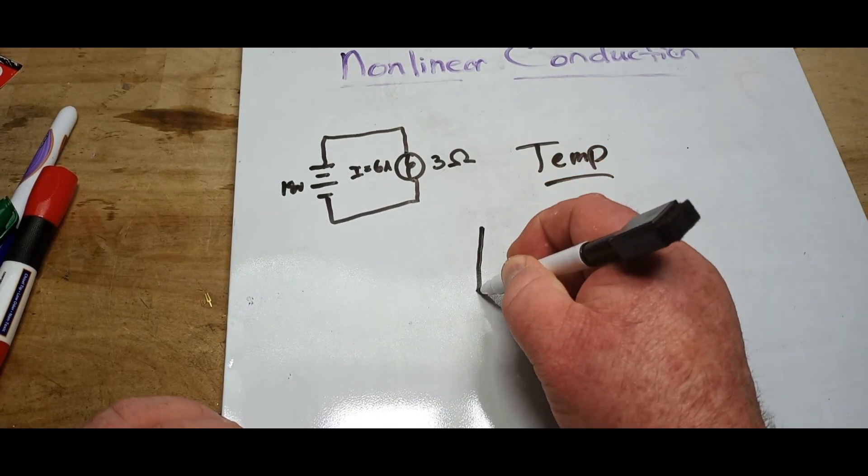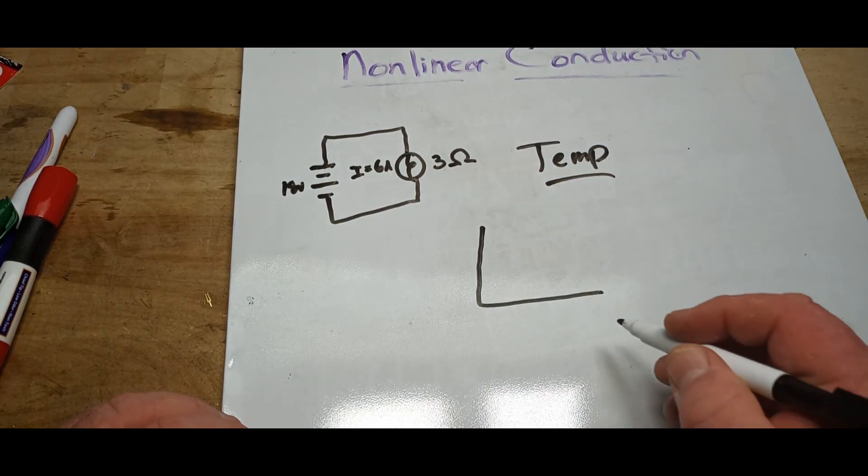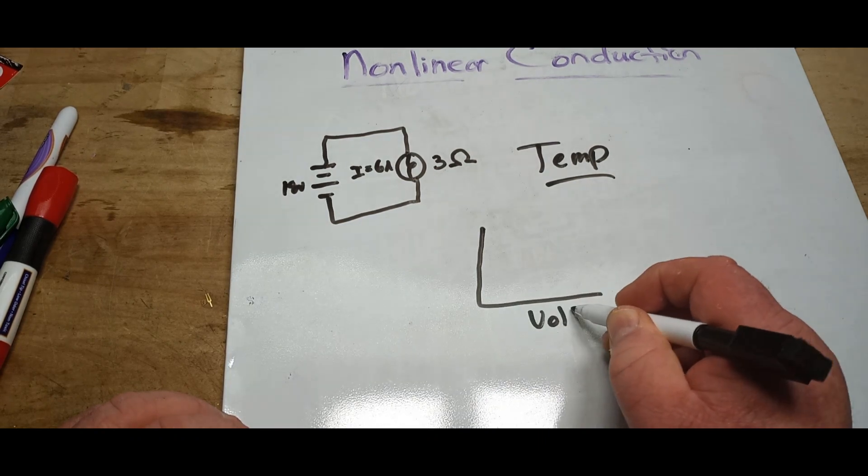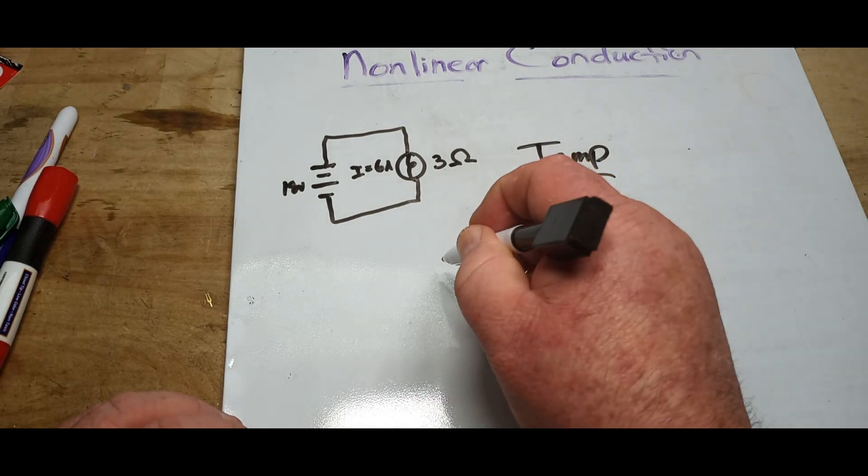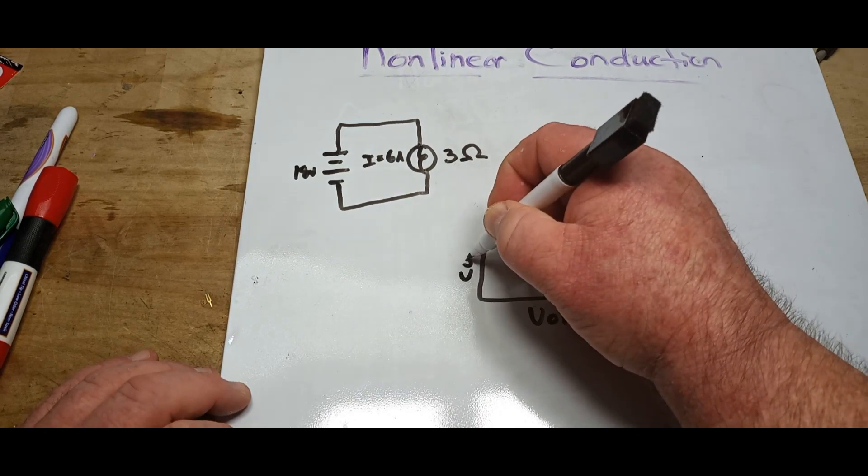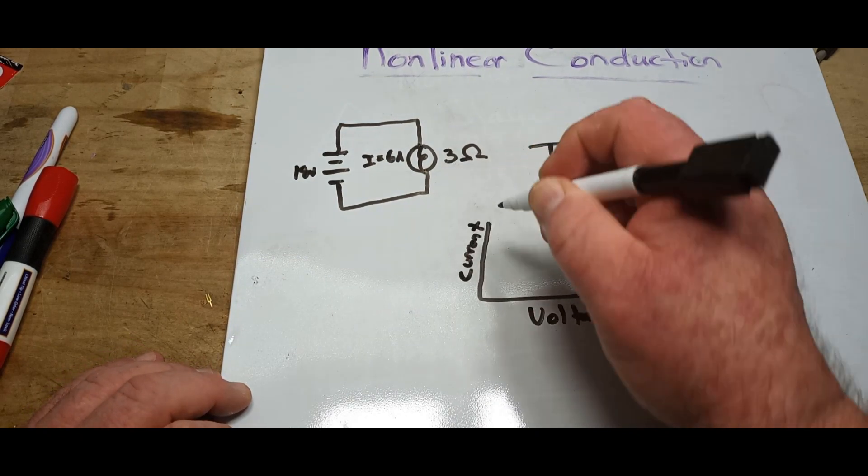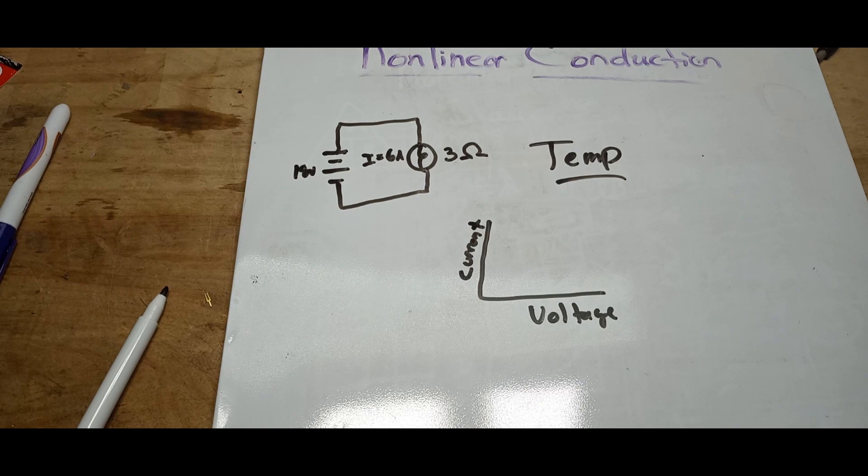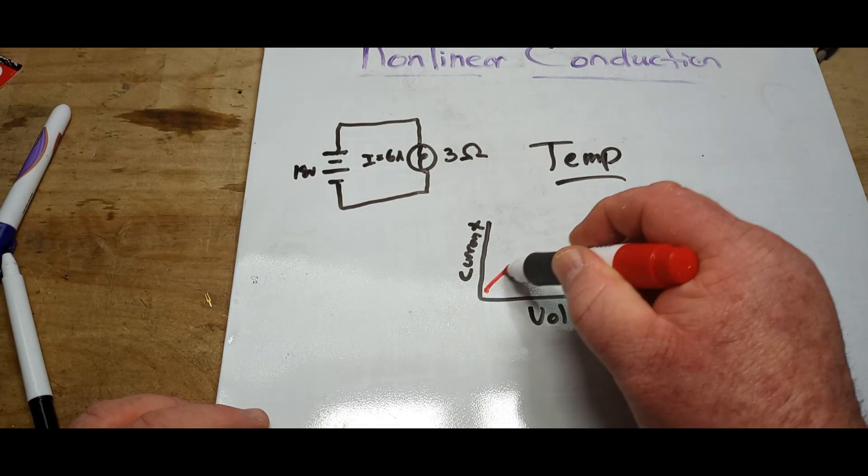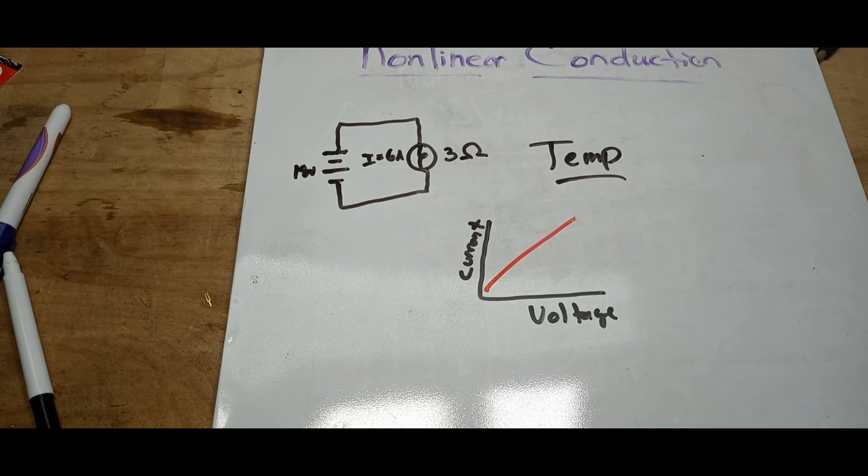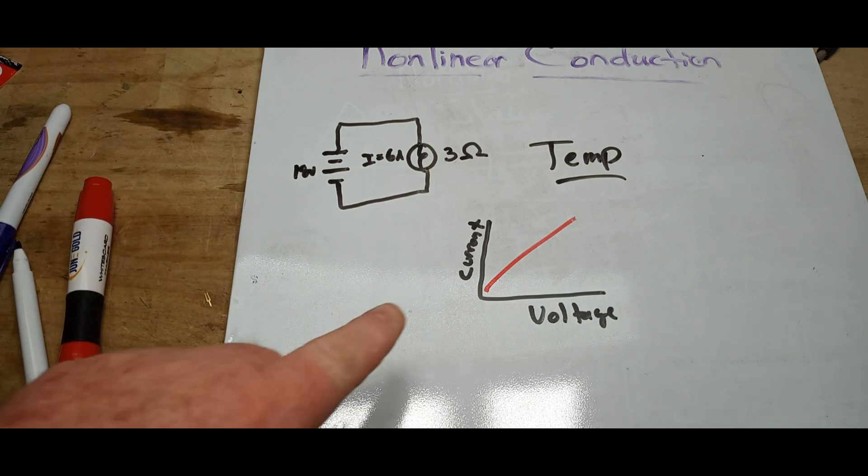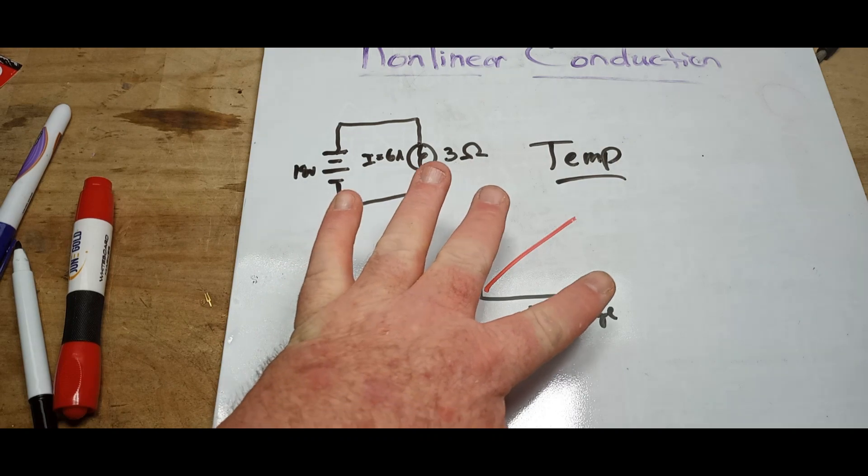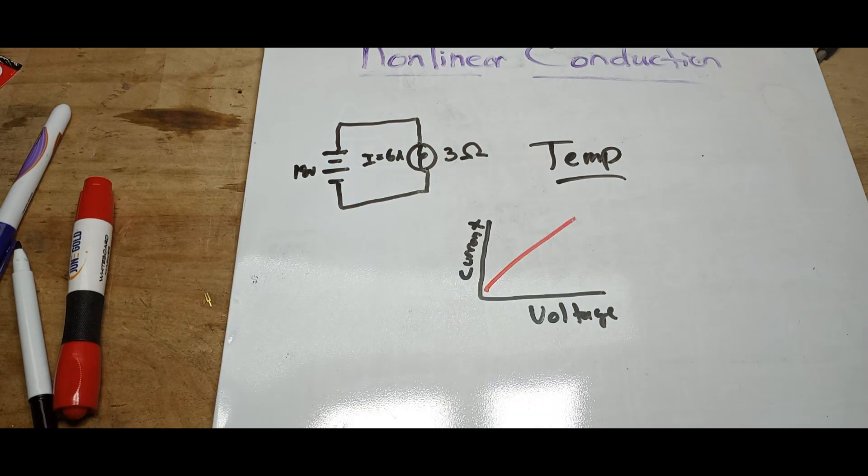Like here's an example graph. So we have voltage here and current here. And there is our linear progression of the resistance: as current and voltage increase, our resistance also increases along a straight line.